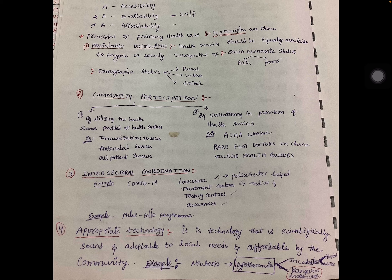For intersectoral coordination, take the example of COVID-19: when COVID-19 came, the government implemented lockdown, the police sector helped, treatment centers and testing centers were set up. You can also remember the pulse polio program as an example of intersectoral coordination.